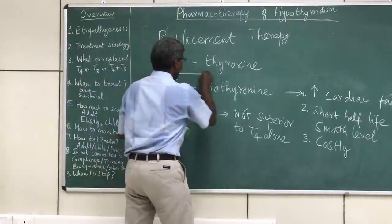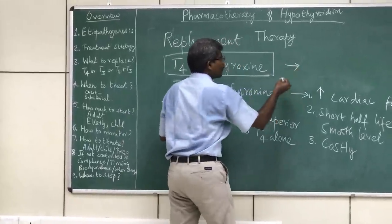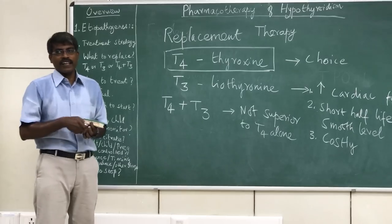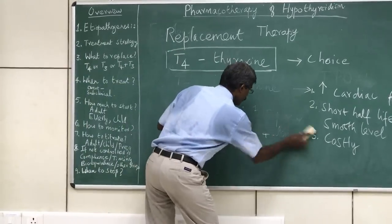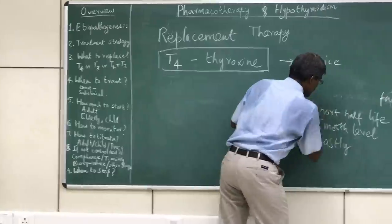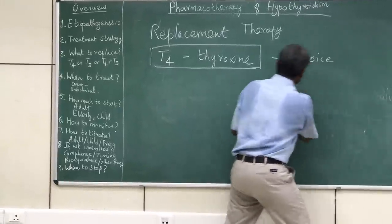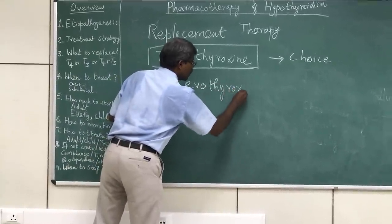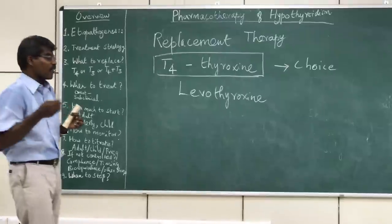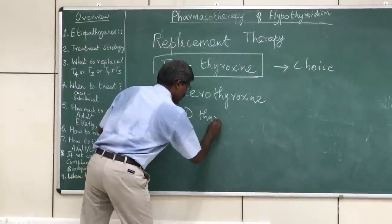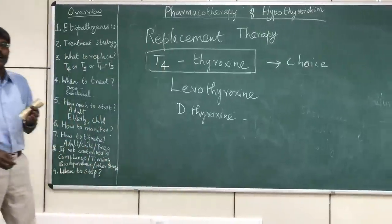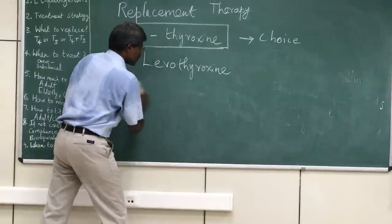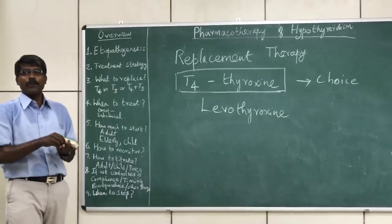Therefore, the drug of choice for replacement therapy is T4, or thyroxine. There are two forms of thyroxine available: for replacement therapy in hypothyroidism, we use the levo form — levothyroxine. The dextro isomer of thyroxine, called D-thyroxine, was previously used as a cholesterol-lowering agent but is not used now. So levothyroxine is the drug of choice.